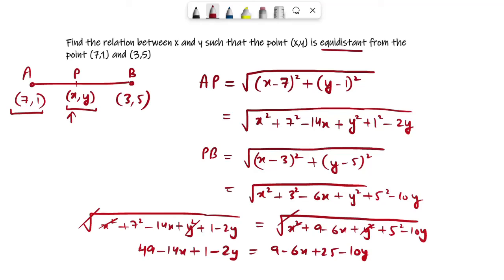Now what you have to do is take all the terms to one side. 49 and 1 can be added to get 50. Now 9 and 25 will be added. How much will 9 and 25 be? It would be 34.